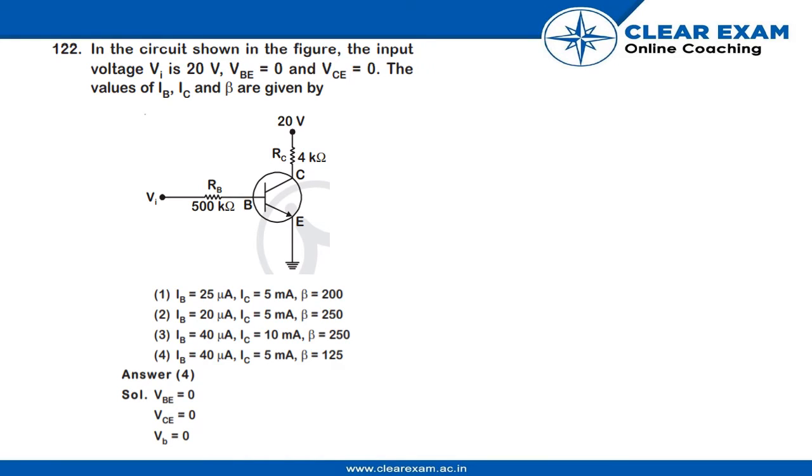Given question, we have a circuit shown in the figure. The input voltage VI is equals to 20 volt, VBE is equals to 0 and VCE is equals to 0. We have to find the values of IB, IC and beta respectively.